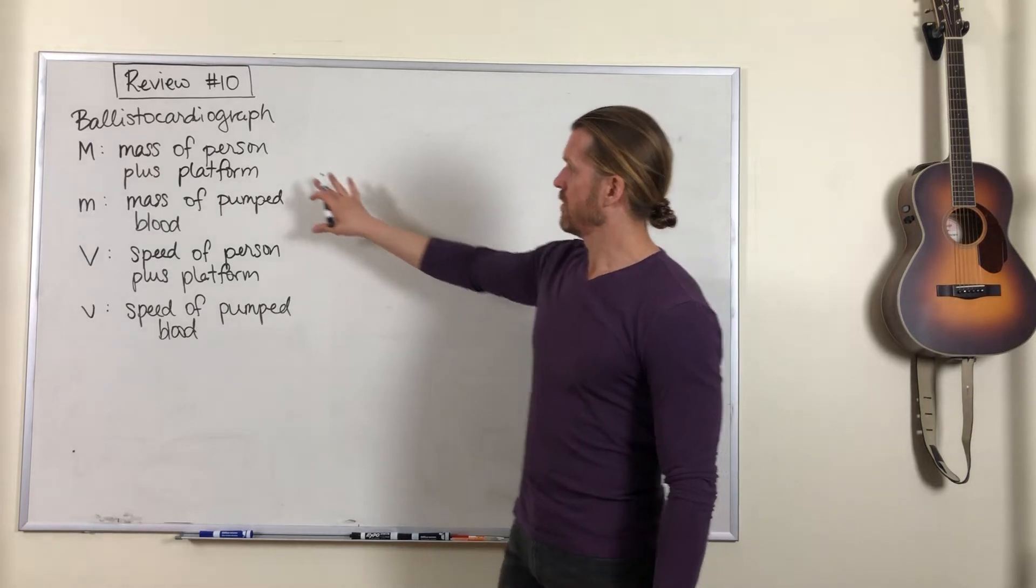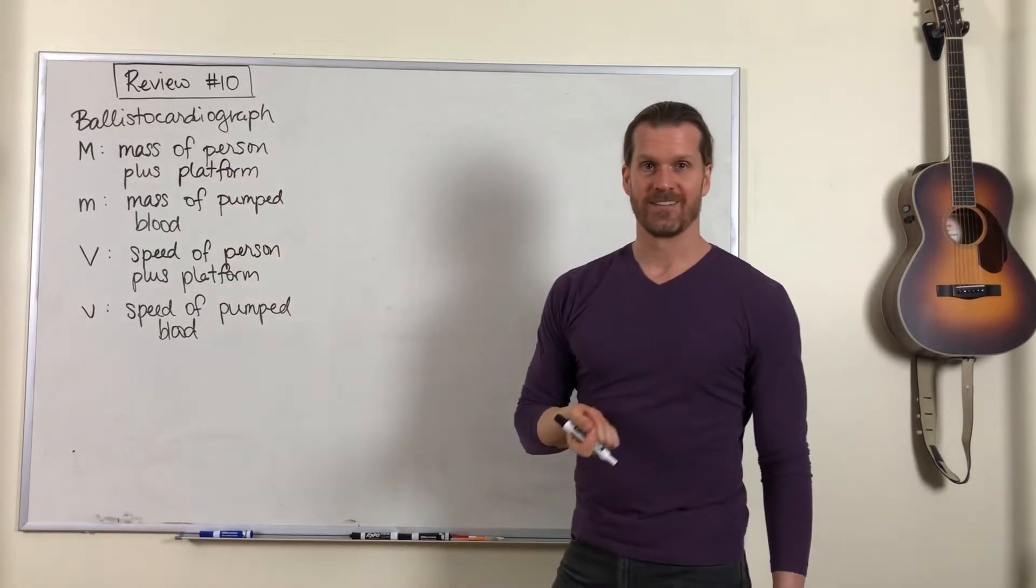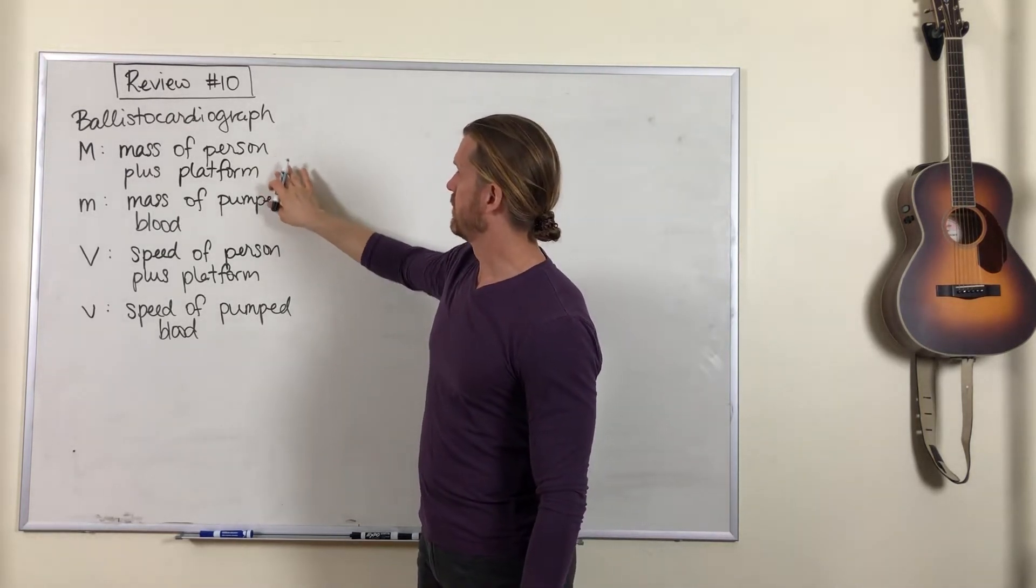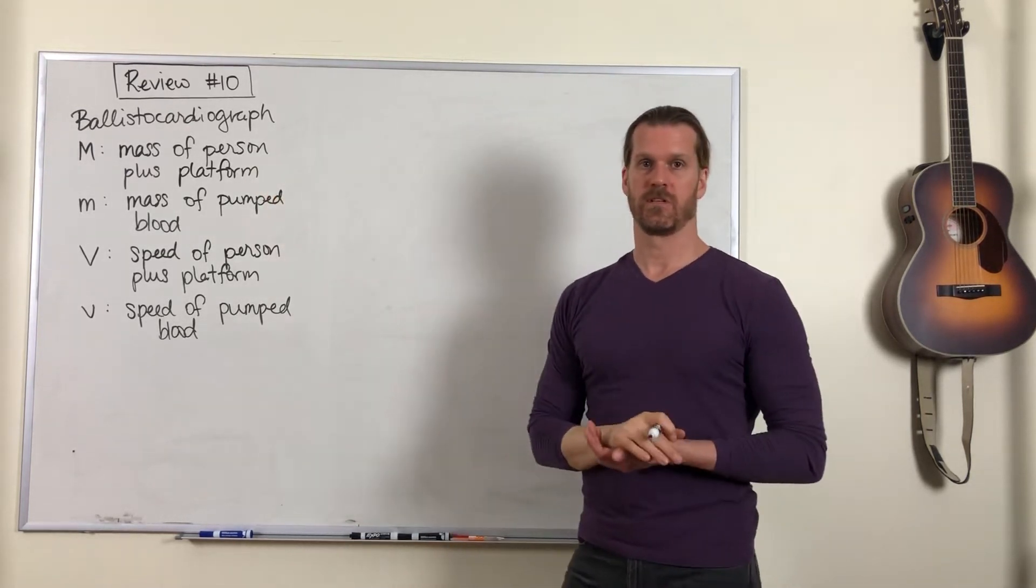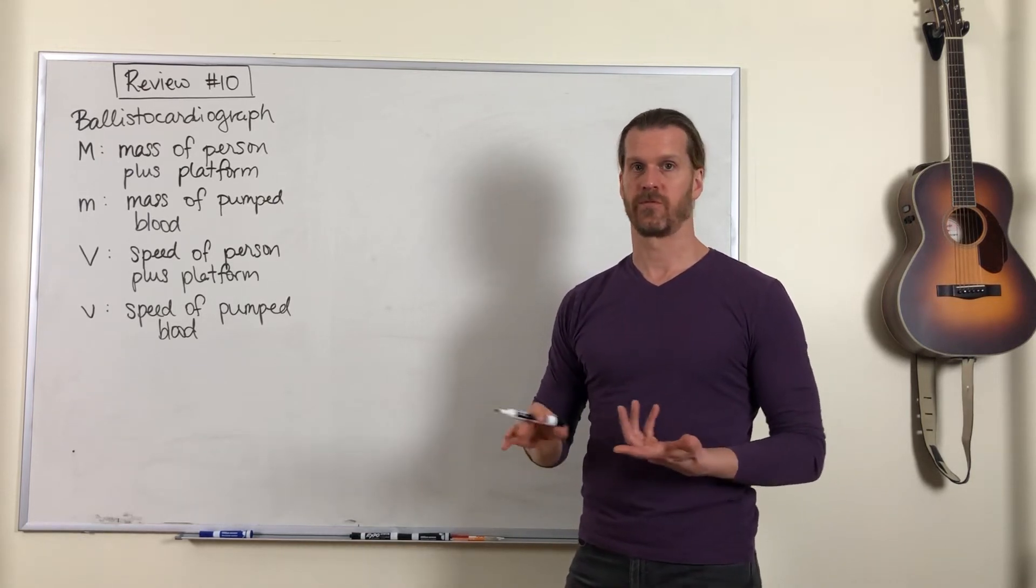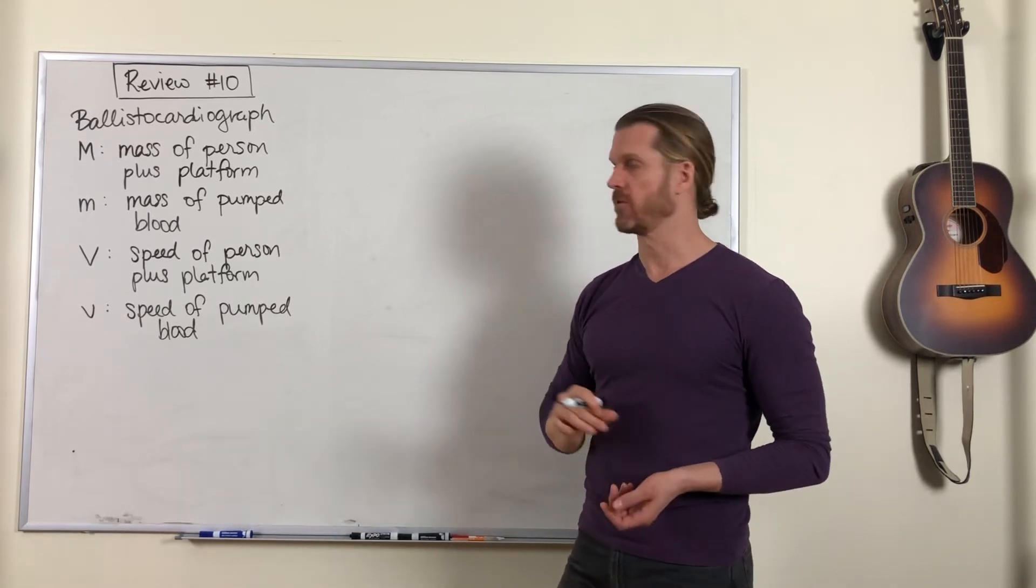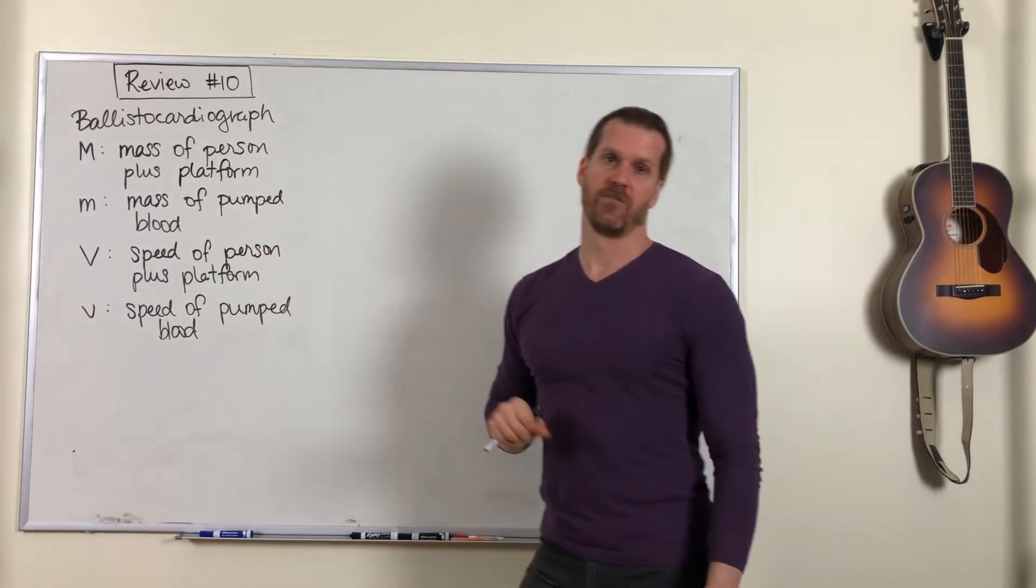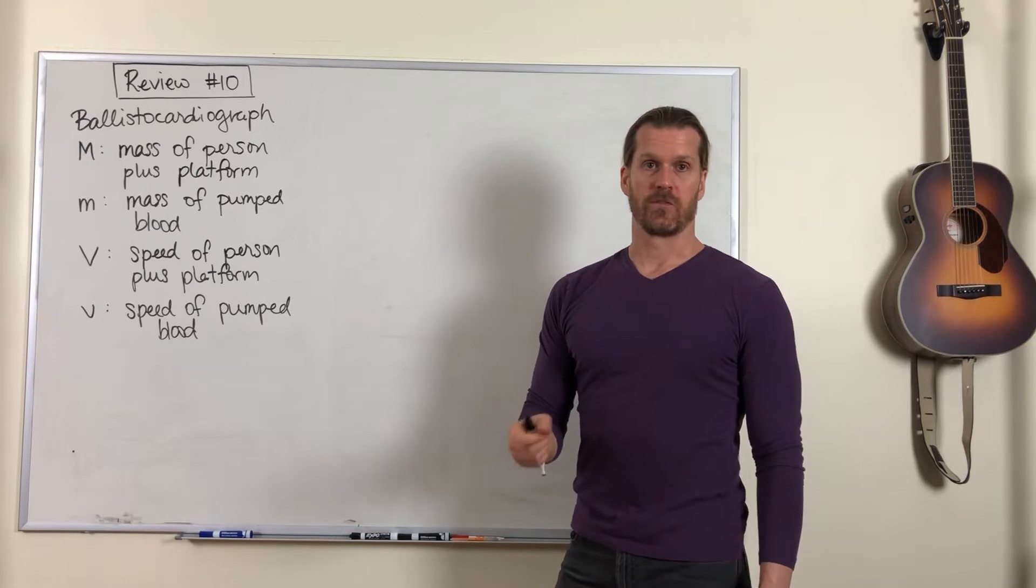So the four parameters that are important in this analysis are the mass of the person plus the mass of the platform, this frictionless palate that they're lying on. This is the mass of the pumped blood. That's what we're going to try to determine.